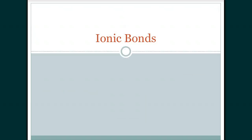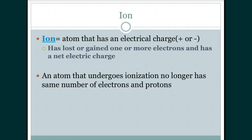We're going to review ionic bonds — what they are and how to name them. Ionic bonds are formed by ions. Ions are atoms that have an electric charge. Usually atoms are neutral because they have the same number of protons and electrons.